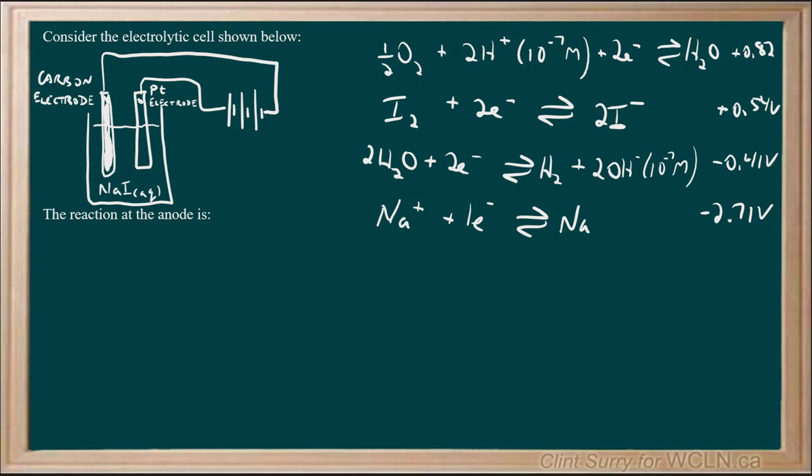With electrolysis, we want an oxidation on top, a reduction on bottom, and we want the pair that's closest together. So let's look at what we actually have in this situation.